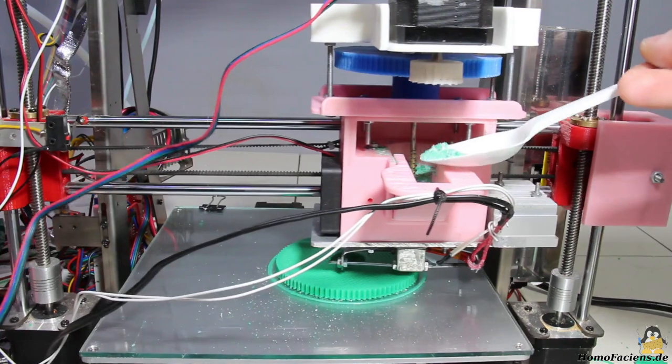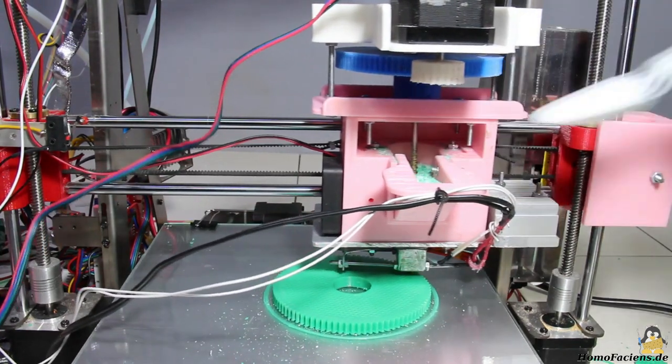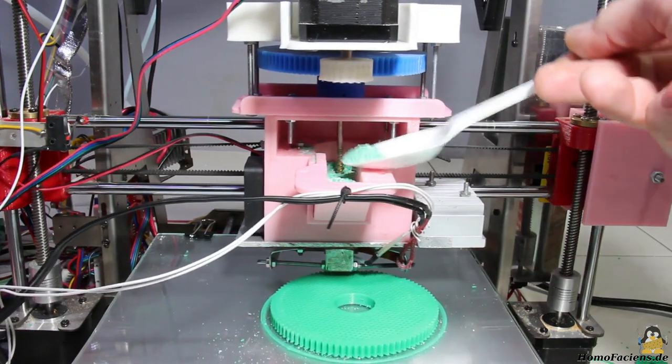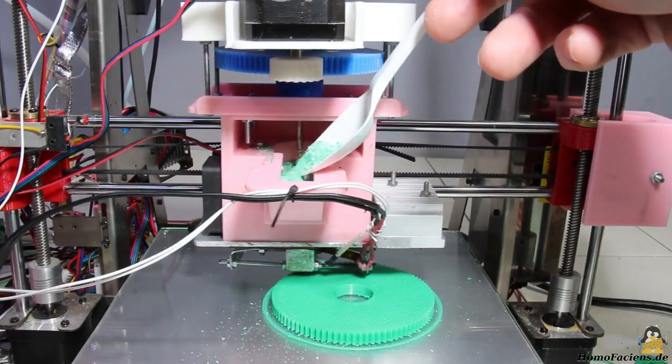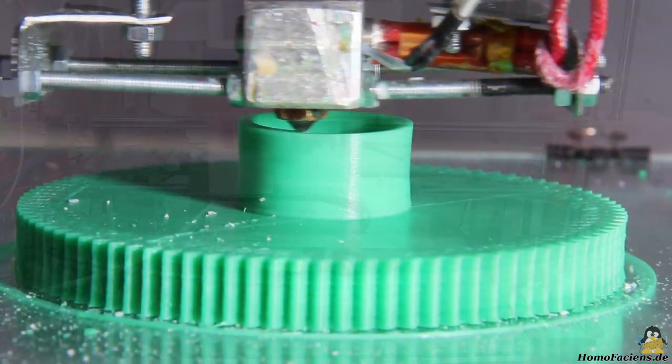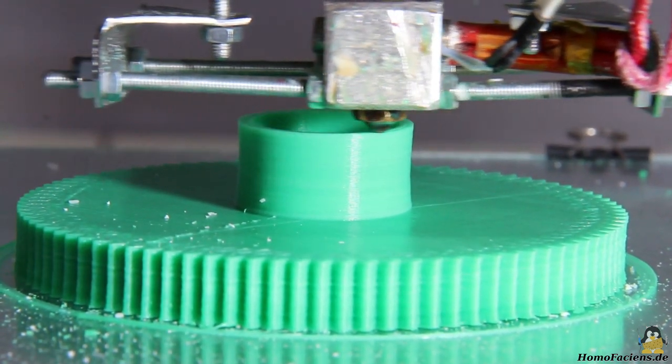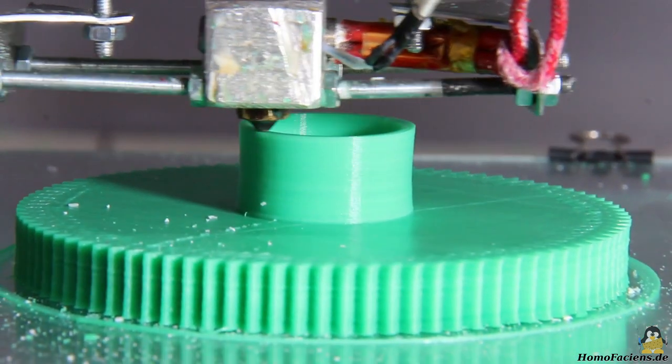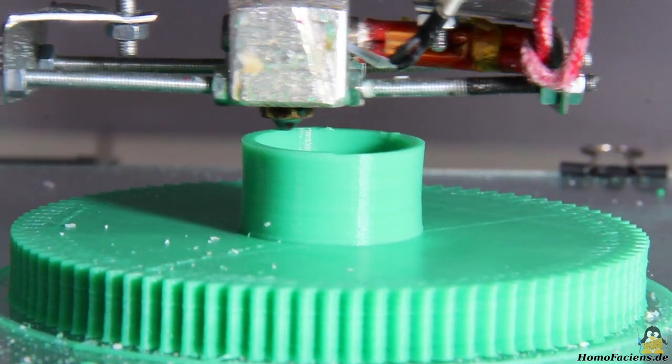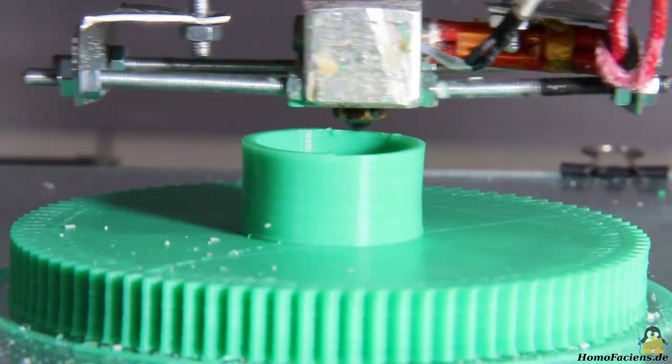According to the calculations of my slicer, the gear wheel consumes about 50 cubic centimeters of PLA, of course in a compact form, not as loose granules. When having a close look at the shaft of the gear you can see that it tilts a bit to the right.